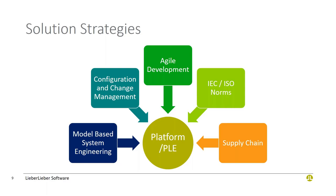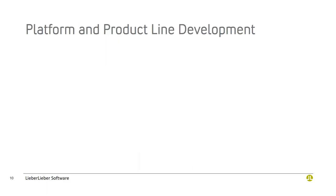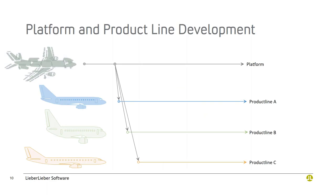They have various solution strategies: model-based systems engineering, good configuration and change management, agile practices, compliance to various norms, and managing a constantly changing supply chain. One of the overall solution scenarios they are aiming for is a platform or product line approach to develop products — and that is today's focus. When we talk about the platform and product line approach, using an airliner example, you typically have a platform and then various products: product line A, B, and C.